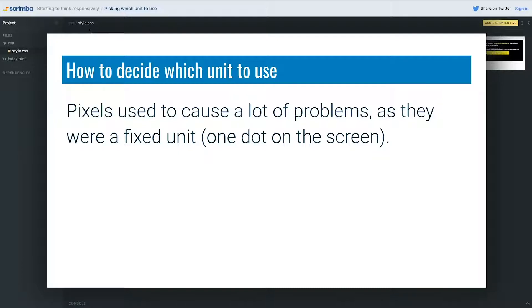Because they were a fixed unit, but not in the same way like a centimeter is. A centimeter you can measure, whereas a pixel was a dot on your screen, and that's technically what a pixel really is. But in CSS, the pixel doesn't look at the dots on the screen anymore.